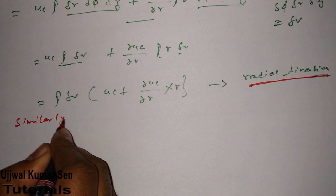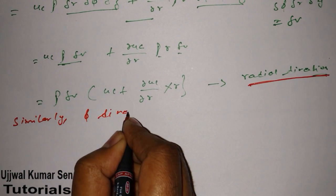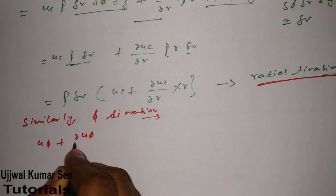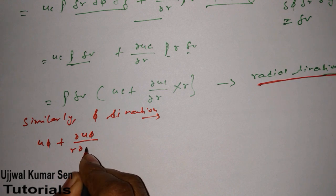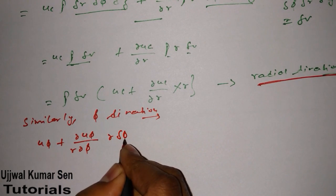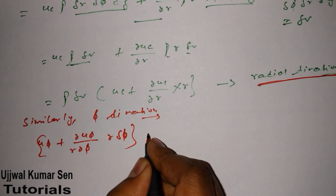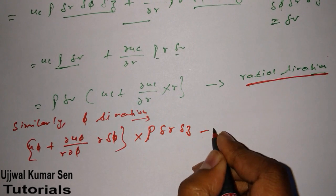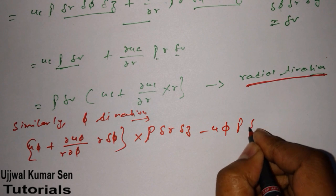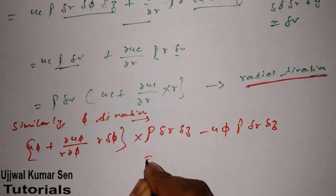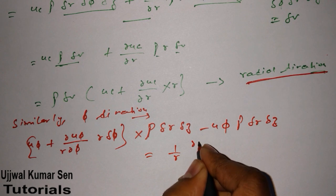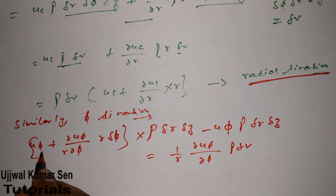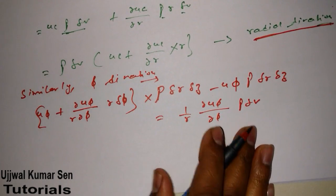Similarly, for the φ direction, we get: (u_φ + ∂u_φ/(r · ∂φ)) · r · δφ multiplied by ρ · δr · δz, minus u_φ · ρ · δr · δz. After the u_φ terms cancel, we get (1/r) · ∂u_φ/∂φ · ρ · δV.